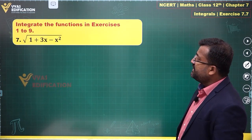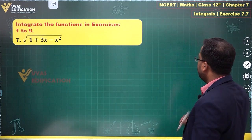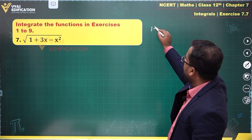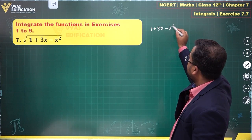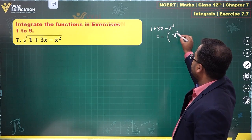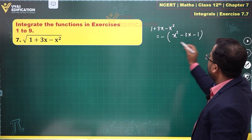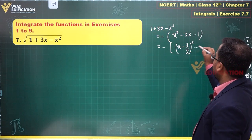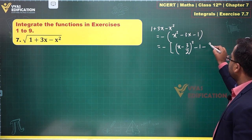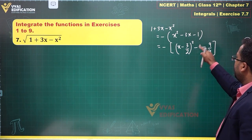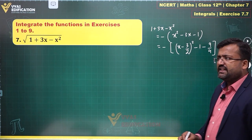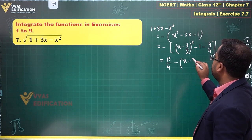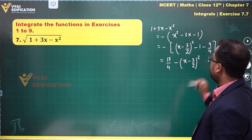In the seventh question we have the integral of √(1 + 3x - x²). We'll focus on creating a perfect square: 1 + 3x - x² becomes -(x² - 3x - 1), which becomes -(x - 3/2)² - 1 - 9/4. The minus signs give us 13/4 - (x - 3/2)².